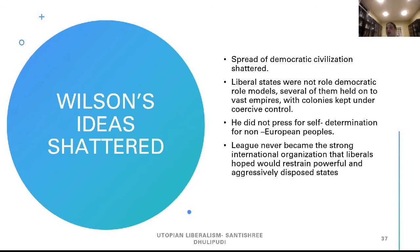Wilson's ideas were shattered. Why are these ideas called utopian? Because in reality, all these good ideas could not translate. The spread of democratic civilization was totally shattered. Liberal states were not only democratic role models — several of them held on to vast empires with colonies kept under coercive control. Great Britain did not press for self-determination for non-European peoples. The League never became the strong international organization hoped for, because the United States — its own president could not pass it through the Senate due to isolationist foreign policy — and the USSR, just formed after the Bolshevik Revolution, was not ready to join.